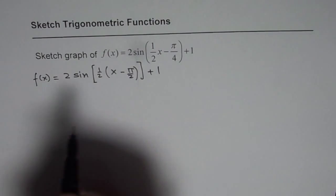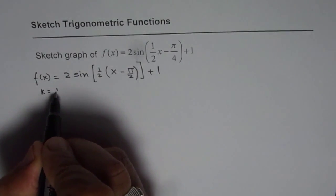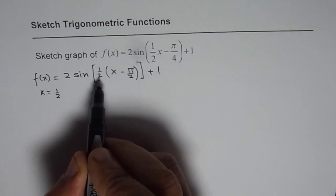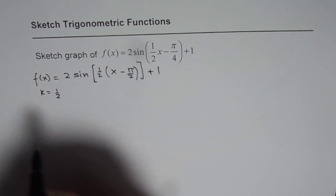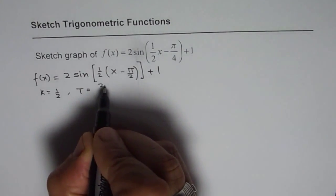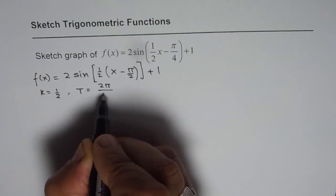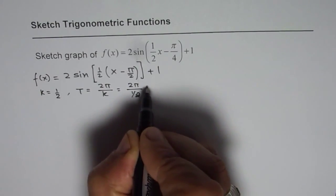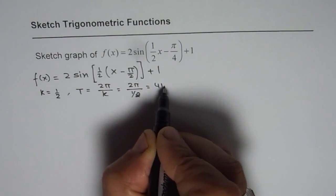Now from here you can see that k is equal to half, which is the horizontal compression, actually the stretch by a factor of 2. Now that gives you the time period. Time period should be equal to 2 pi by k, which in this case would be 2 pi by half, which is 4 pi.